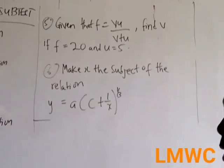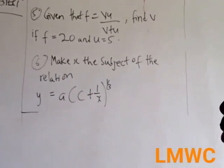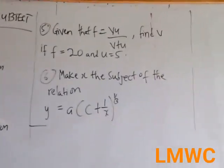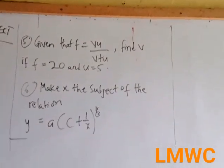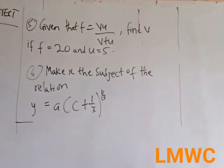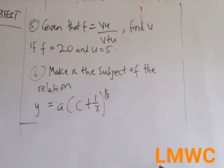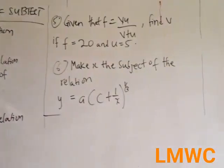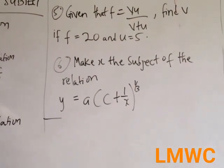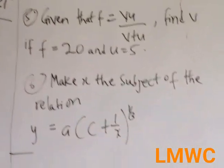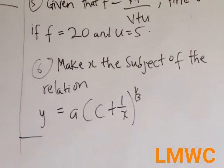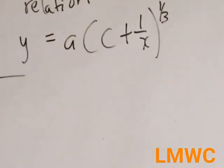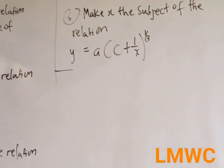So always for change of subject, you always clear roots, fractions, and brackets if they are present. After that, once you have cleared your fractions, brackets, or roots, you group the letter they are asking you to make the subject. Once you group that letter, you factorize that letter if there is the need to factorize.